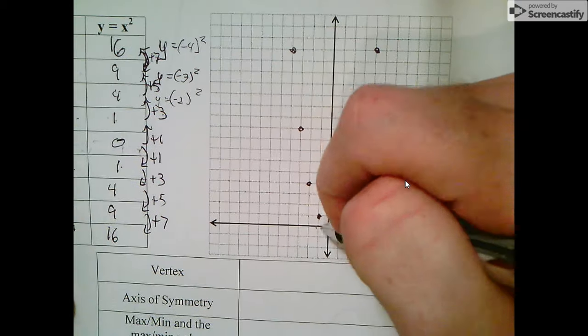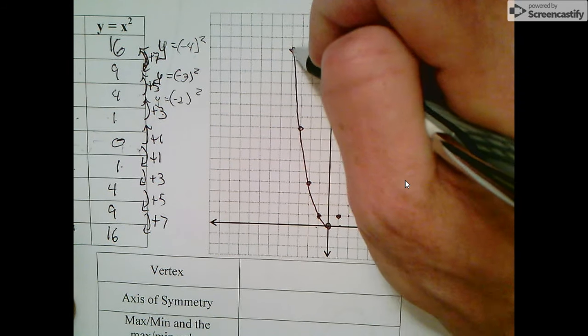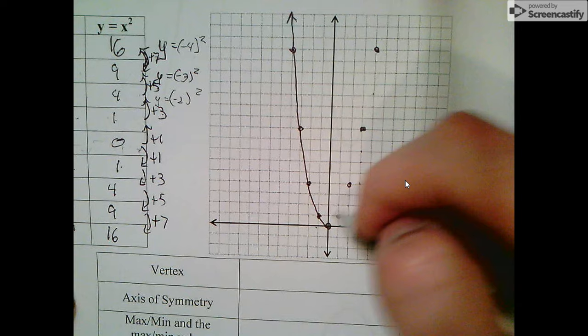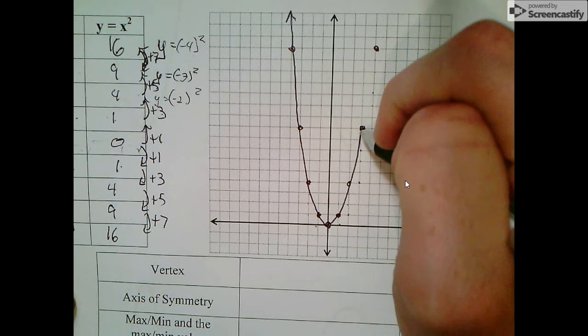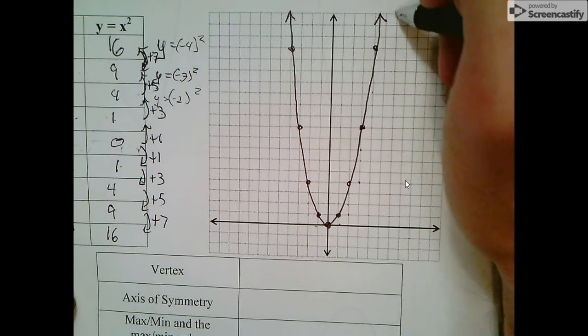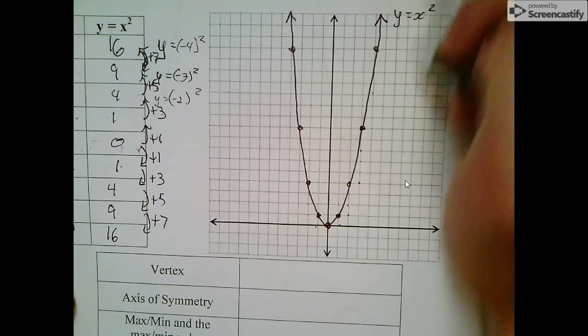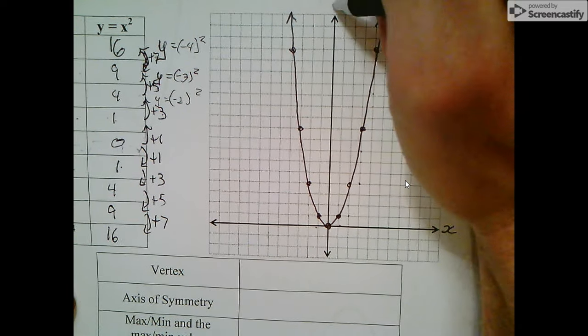We draw a nice smooth line through the whole thing, right to the edge of the graph, and put an arrow on the edge. We should label our graph y equals x squared, and also label our axes x and y.